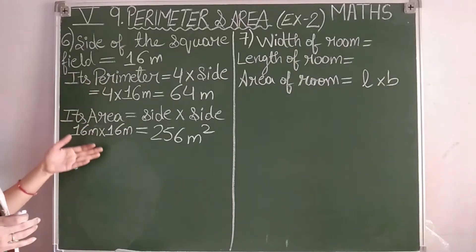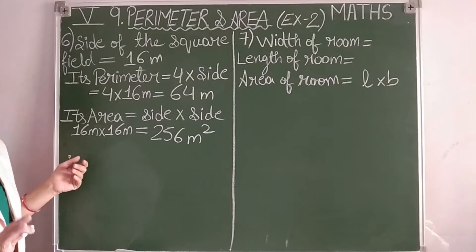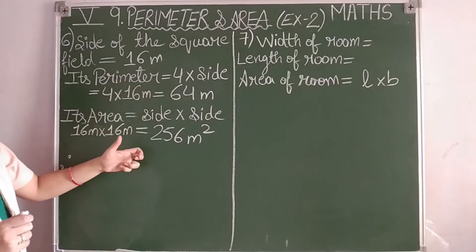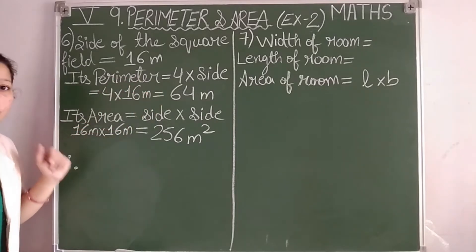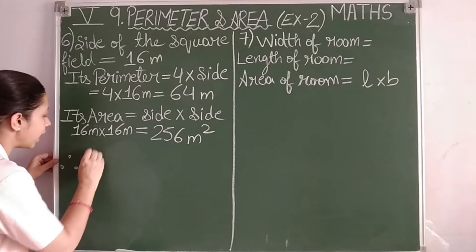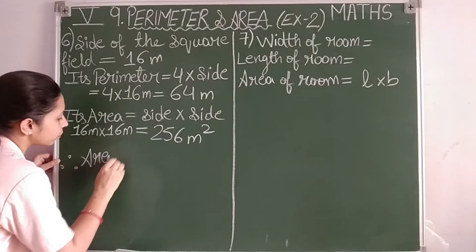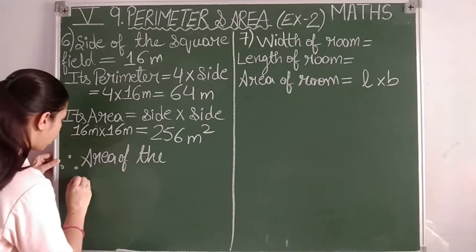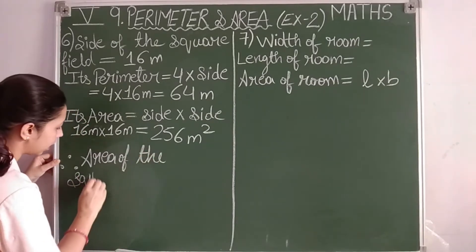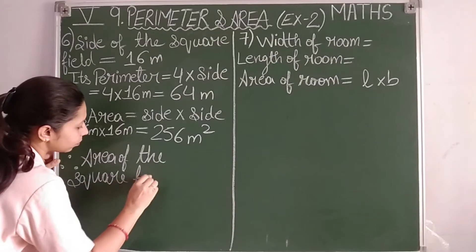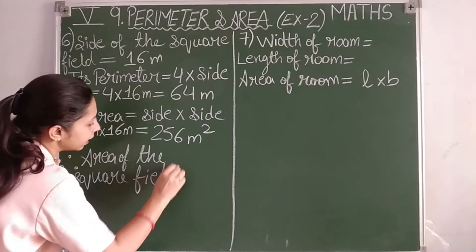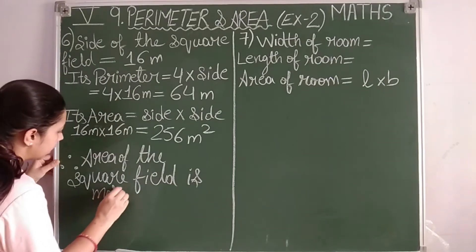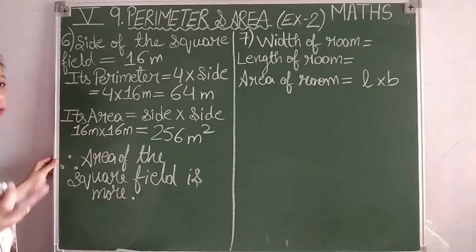Now, which is more? The perimeter is only 64 meters whereas the area is 256 square meters, so the area of the square field is more than the perimeter.